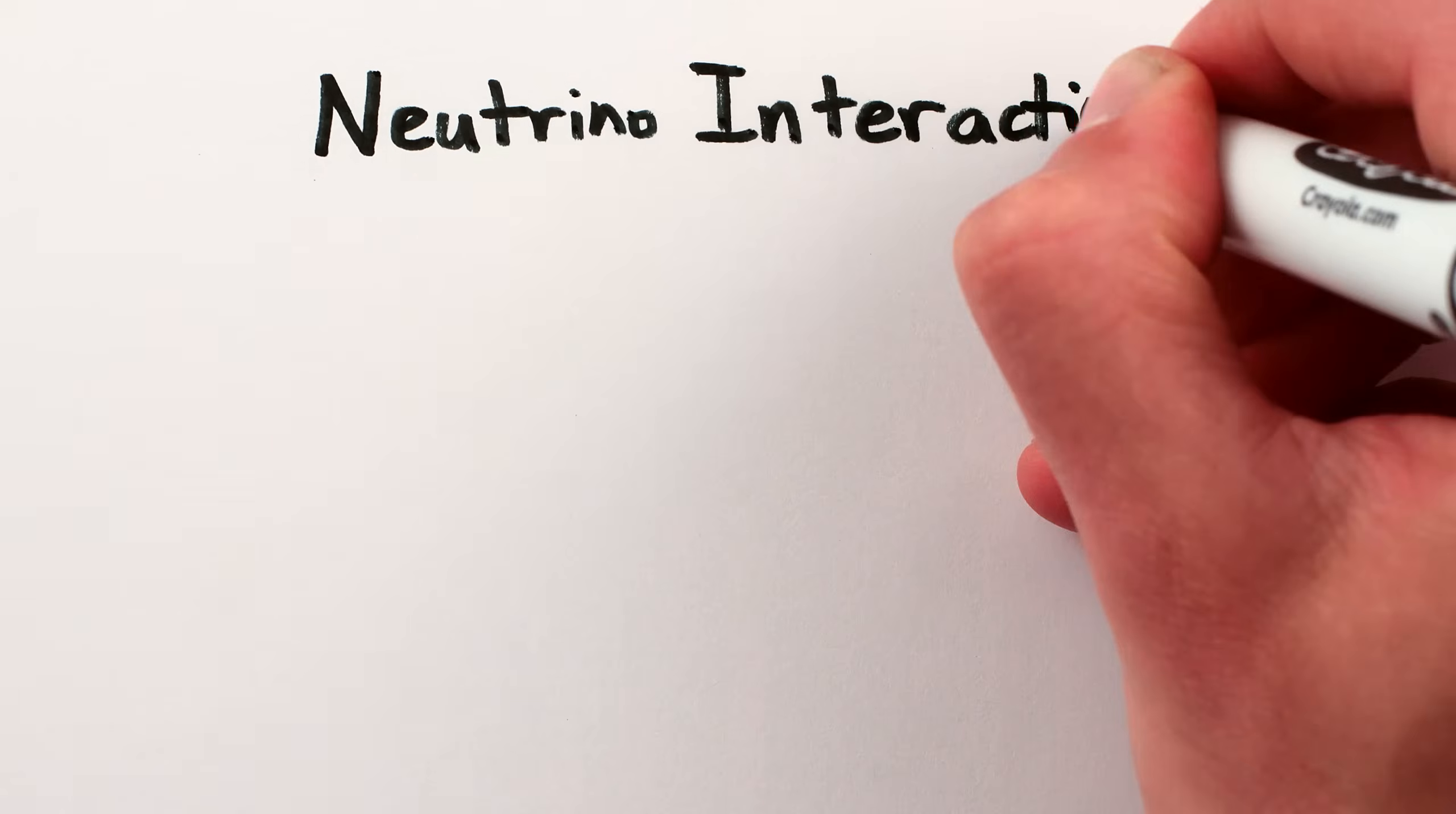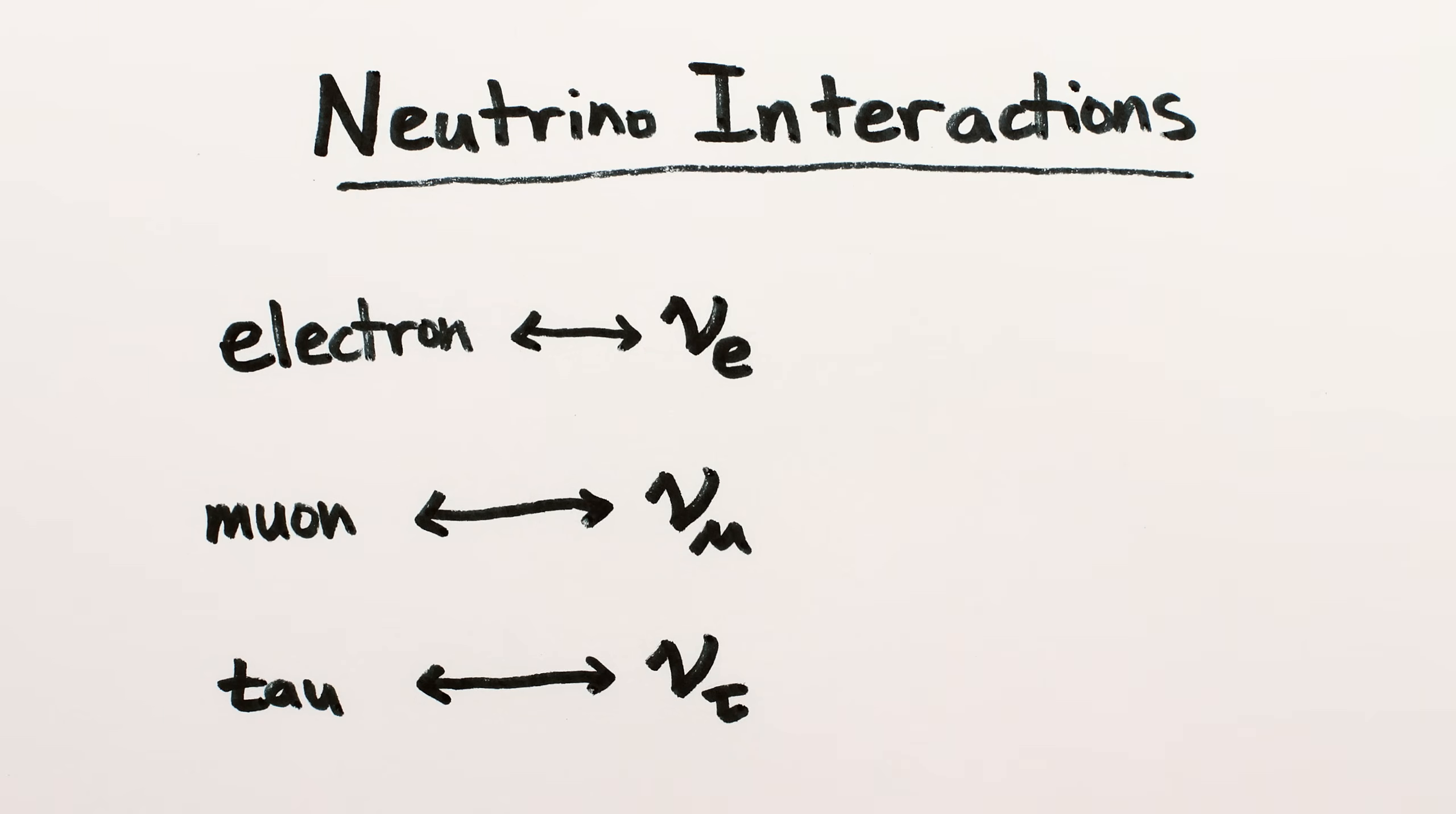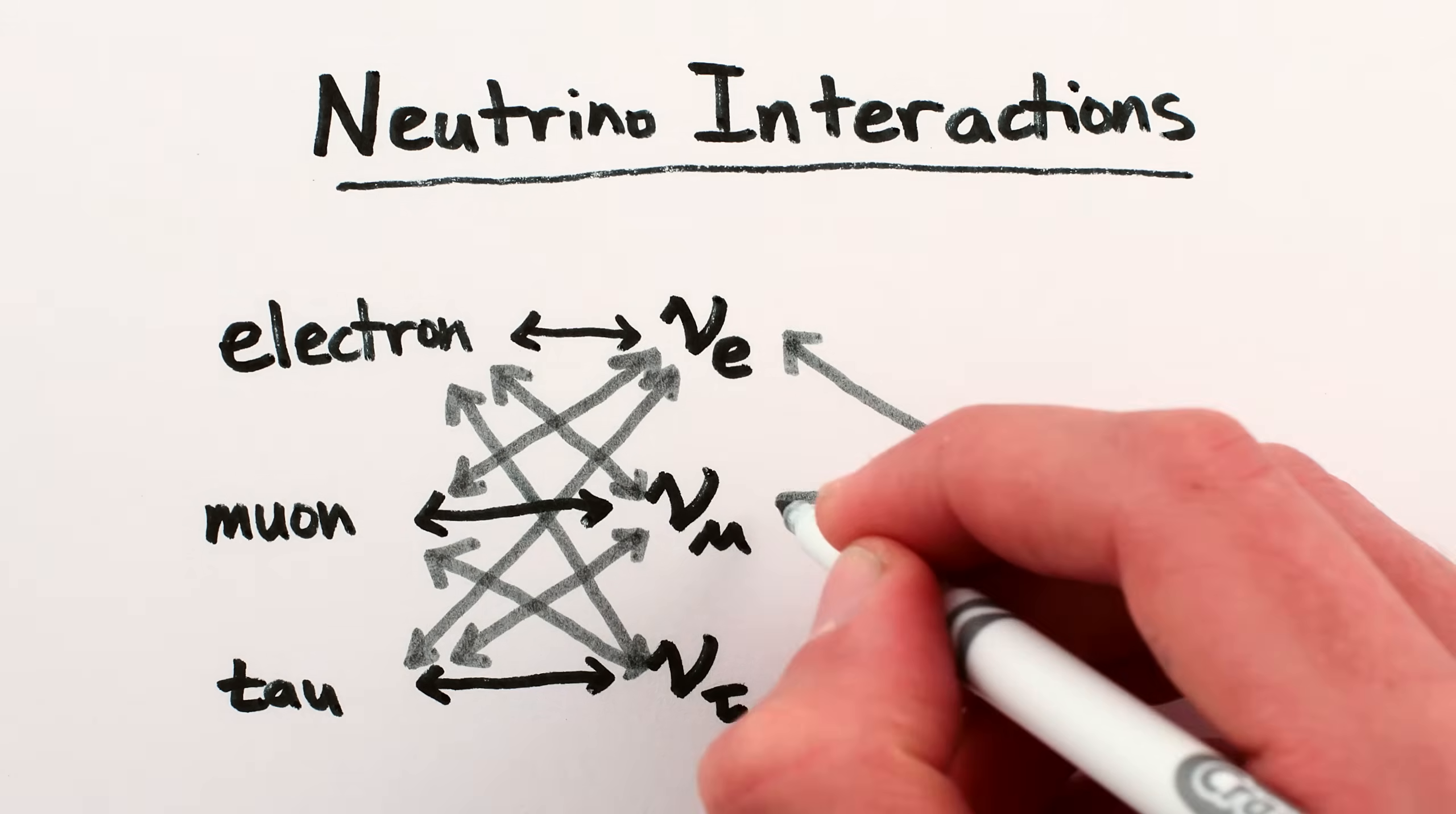Oh, and one other little technicality, even though the three interaction neutrinos are named after the specific electron family particles that are involved in their creation and annihilation, they can still interact with, or bounce off of, other members of the electron family, as well as the quarks.